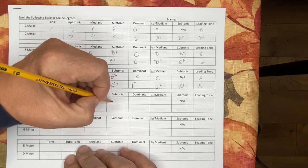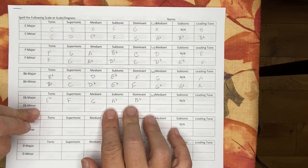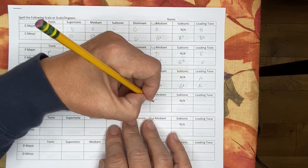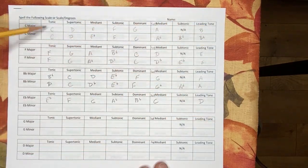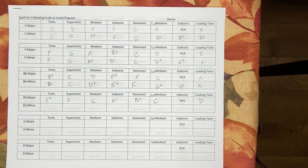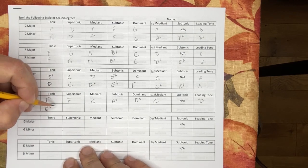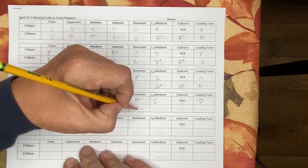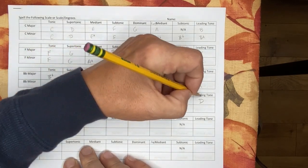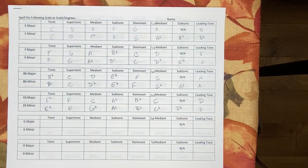E flat major has three flats: E flat, F, G, A flat, B flat. Those are my mediant. Lowering the submediant, lowering the leading tone into the subtonic. And then of course the leading tone stays the same.